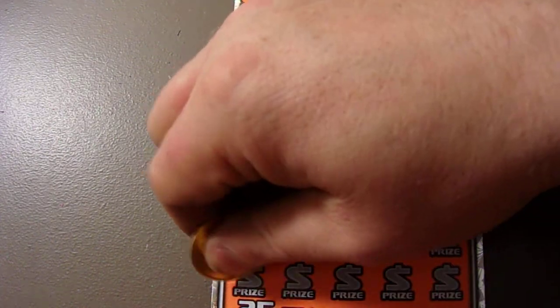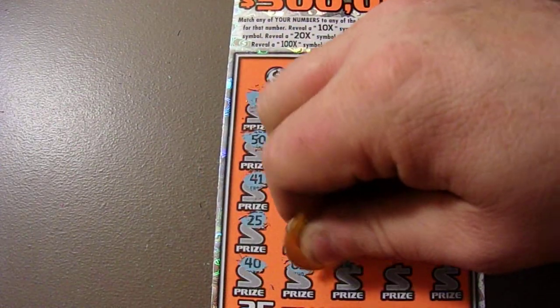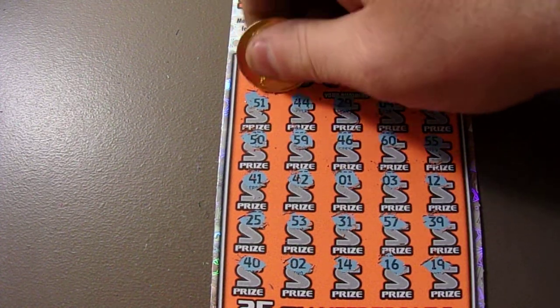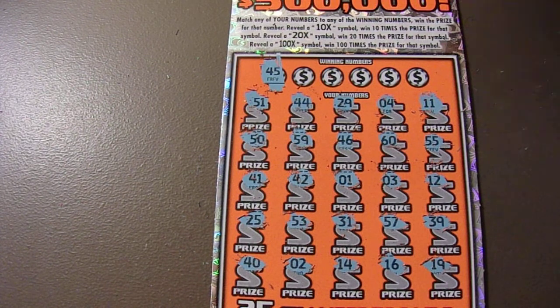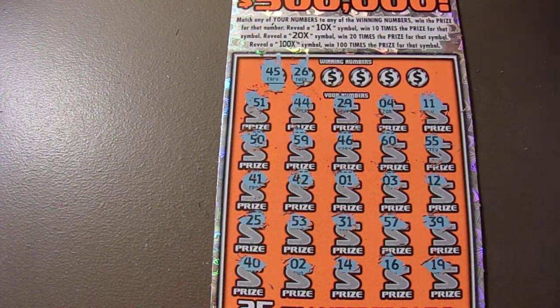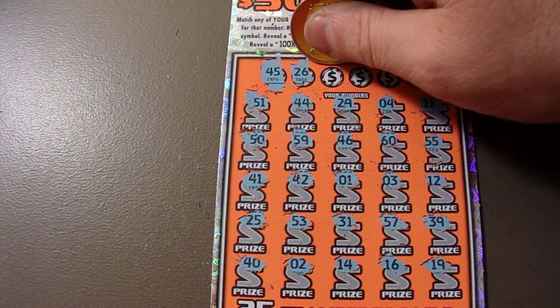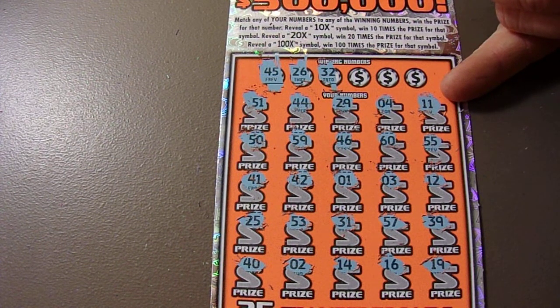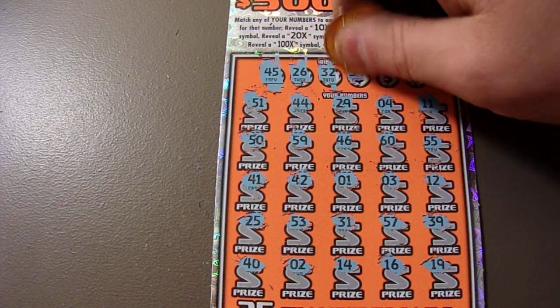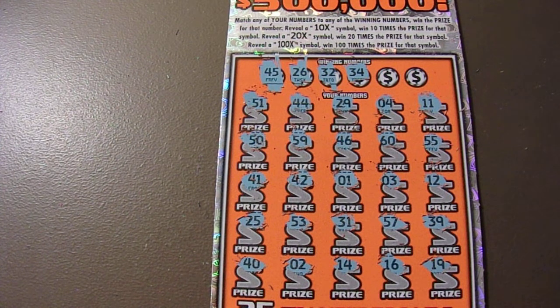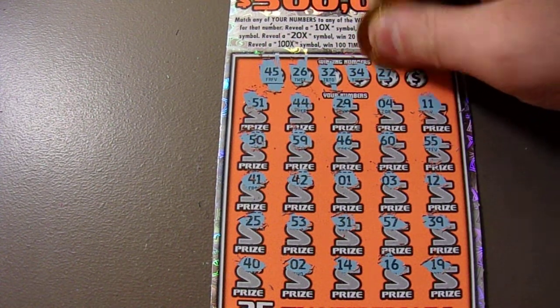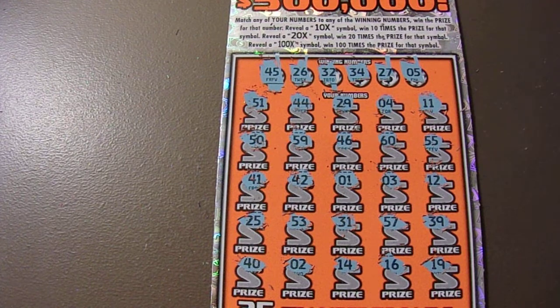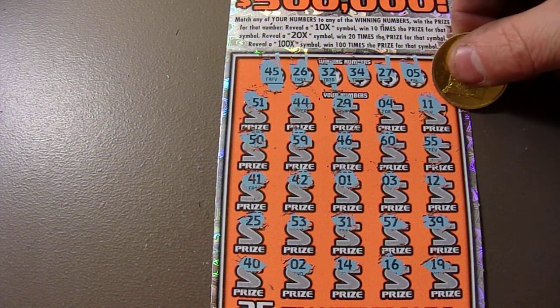Alright, so no multipliers. Looking for 45, 44, 46, 26... no 26, 32. See a 31, how about 34... no 34, 27. No 27. And number five, we got a four, we got a 50... hmm, no five.